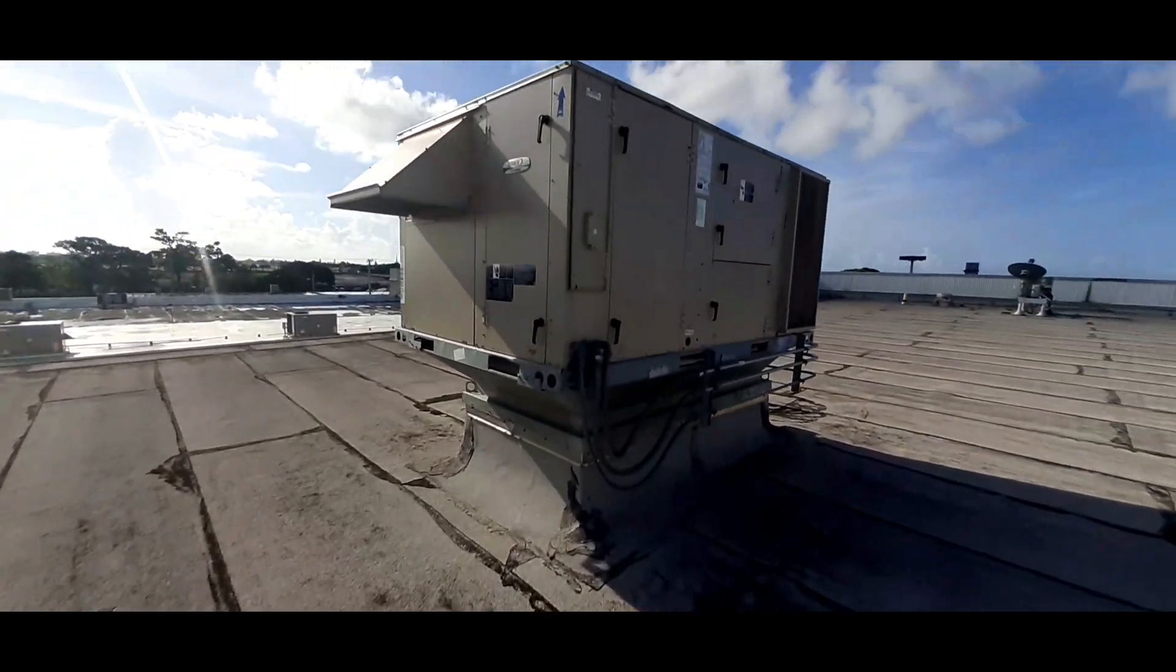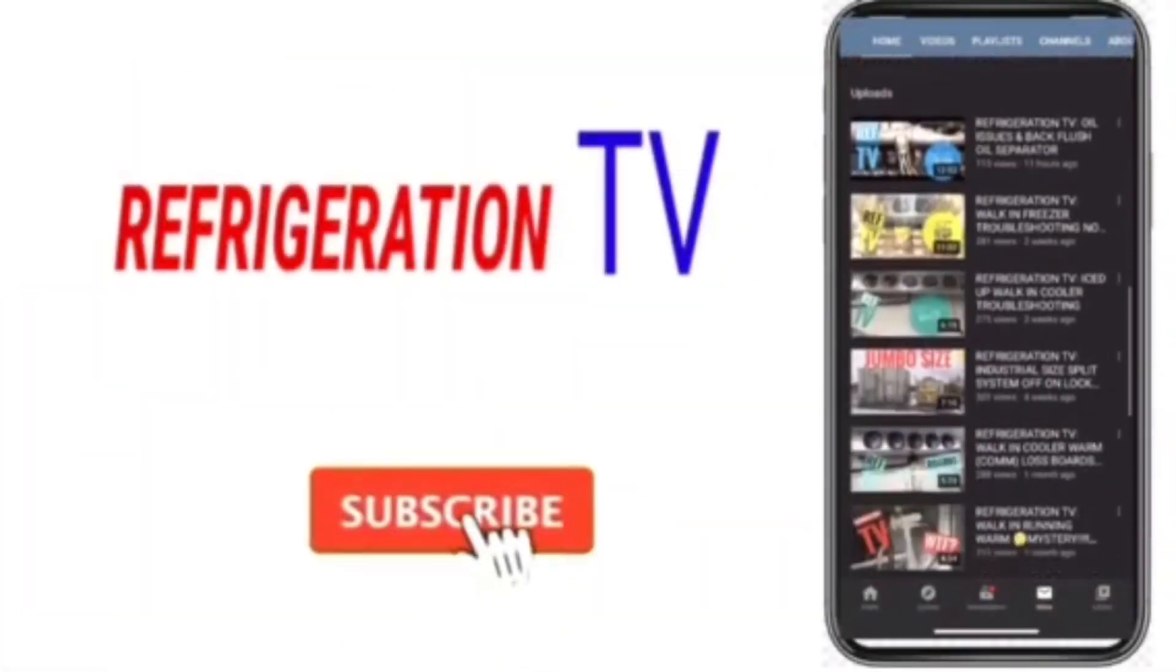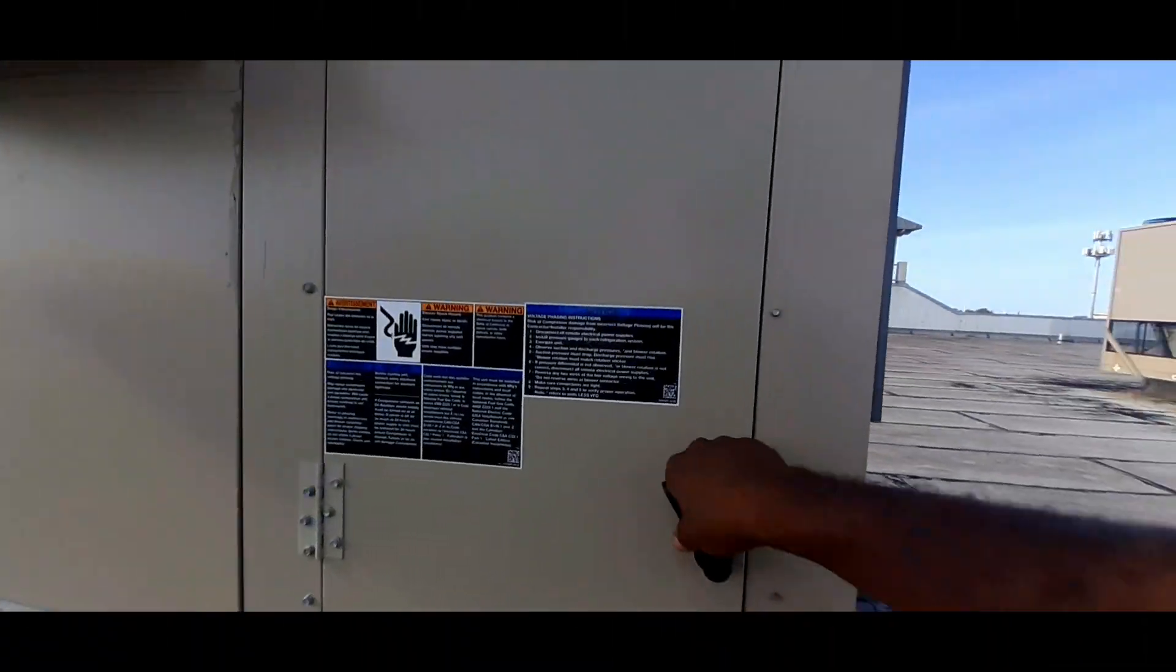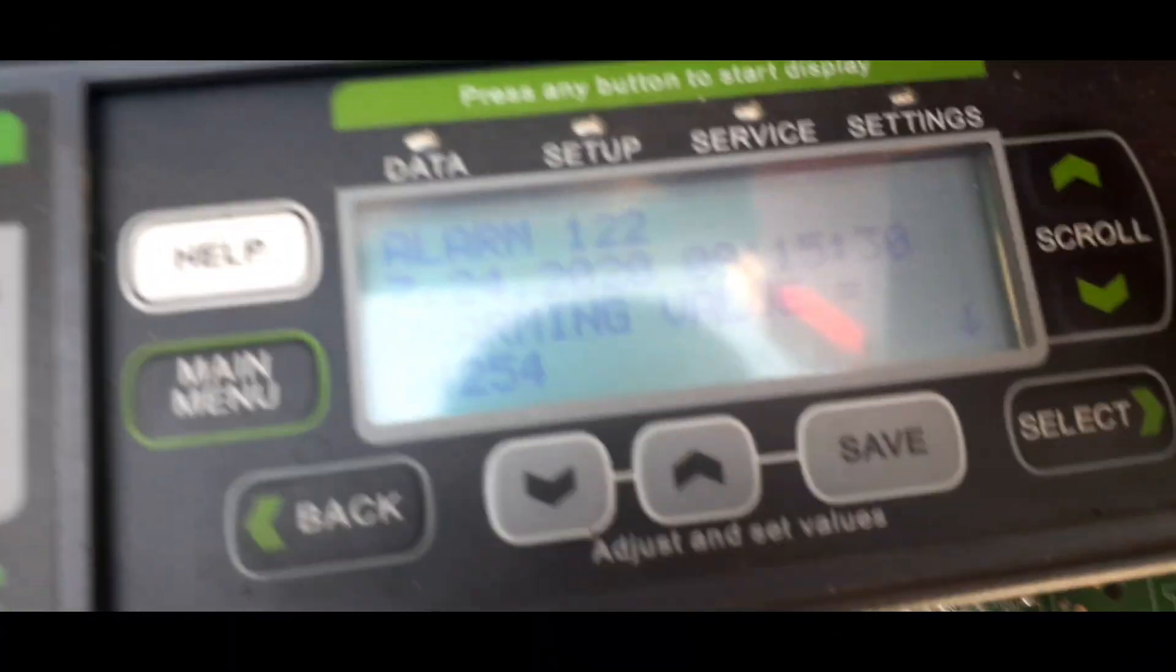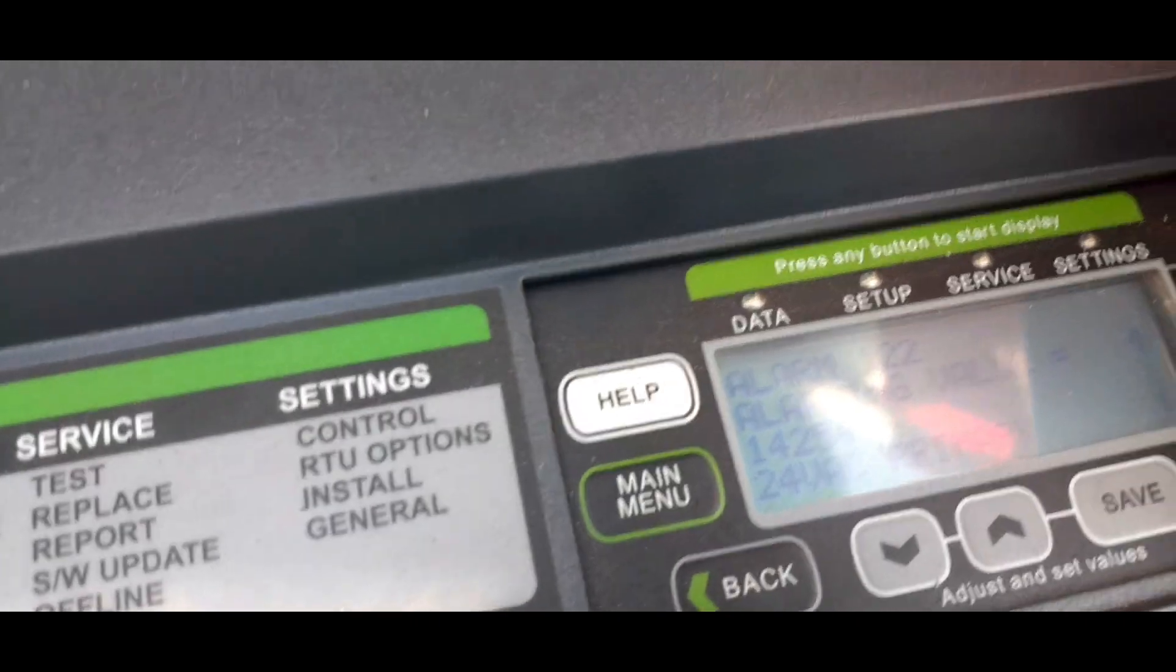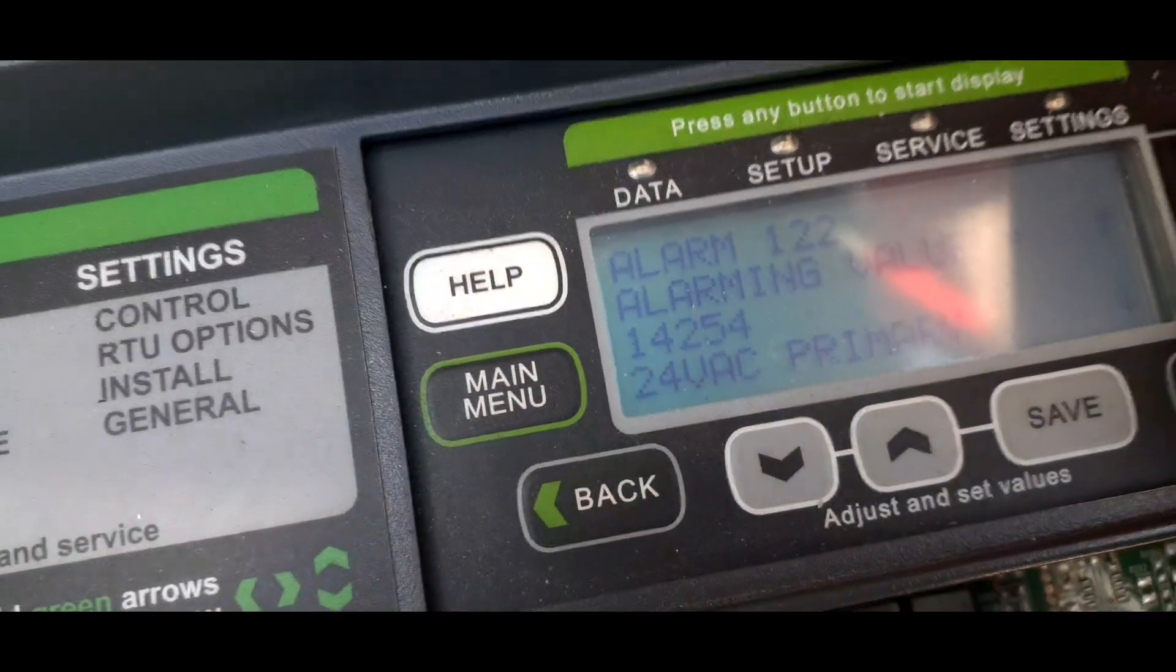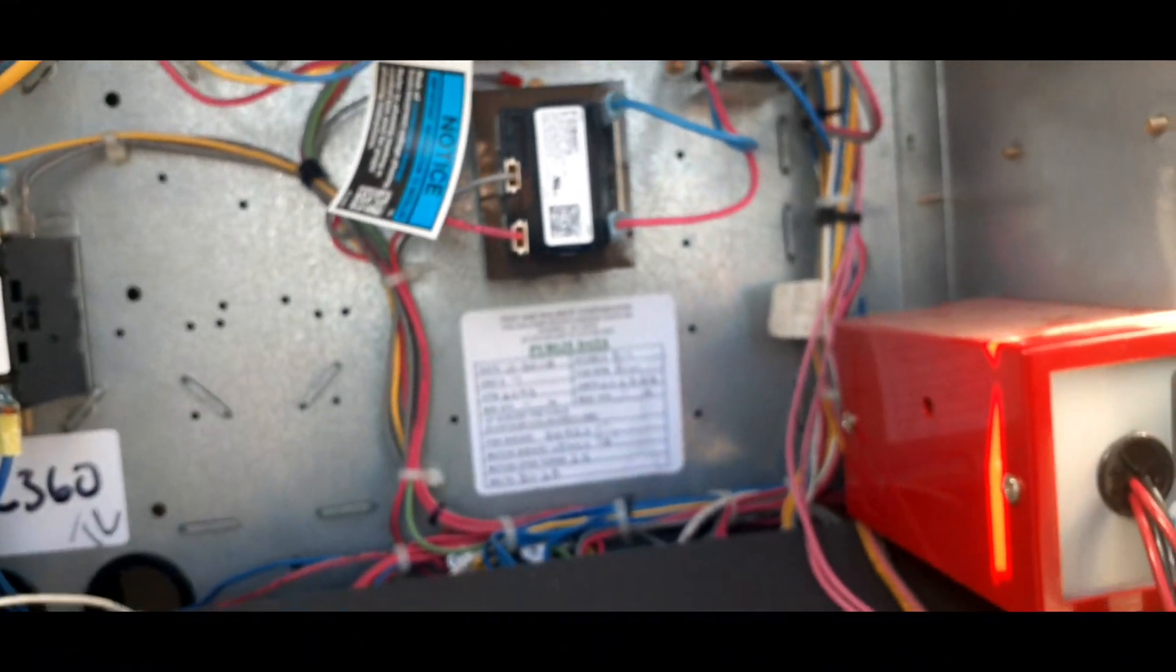All right, so we got a service call. I got a Lennox unit that's not cooling. So far sounds like it's not running, nothing's running. Open this up, my controller right here. All right, so let's see what we got here. What's that? Alarm 122. Scroll down, alarm value 14254, 24 volts primary. So it says that we don't have 24 volts, the voltage is low. We got two transformers up here.